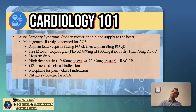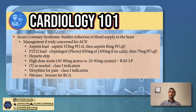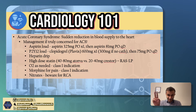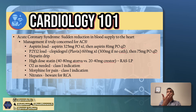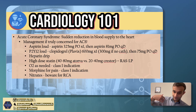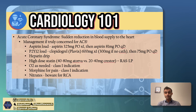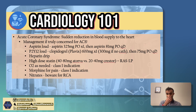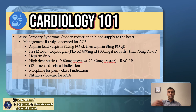Once you confirm ACS, here's what to do acutely. First, aspirin load — give 325 mg (four pills), then continue 81 mg daily afterwards. Then do a P2Y12 load: at Stanford we usually do a Plavix (clopidogrel) load of 600 mg once, then 75 mg afterwards — specifically 600 mg if cath is being considered. You can also use Ticagrelor. Then start a heparin drip for anticoagulation, and start a high-dose statin — rosuvastatin (Crestor) 20 or 40 mg, or atorvastatin 40 or 80 mg.